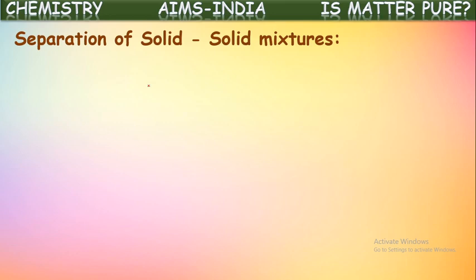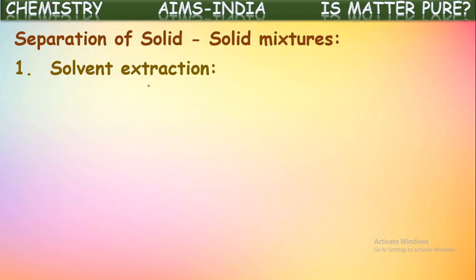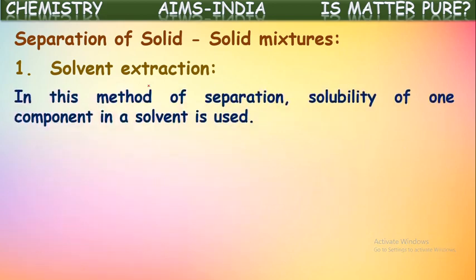Let us see how some homogeneous mixtures are separated. One category is solid-solid mixtures. One of the techniques used for separation of solid-solid mixtures is solvent extraction. In this method, the solubility of one of the components in a solvent is used.